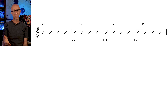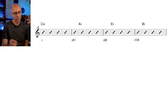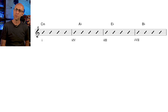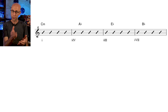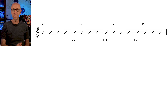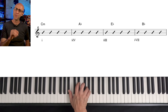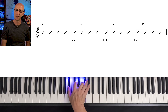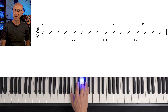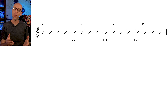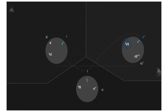You can see this as a 1 minor aeolian, b6, b3, b7. In C aeolian, that's C minor, A flat major, E flat major, and B flat major. It's kind of a backward progression because it moves counterclockwise around the harmony map.